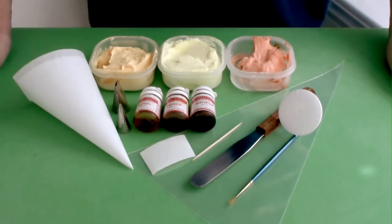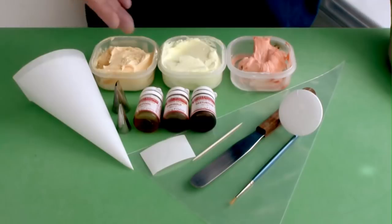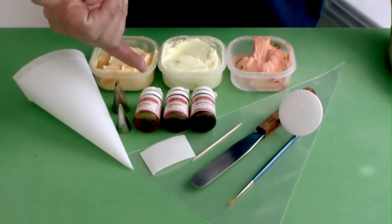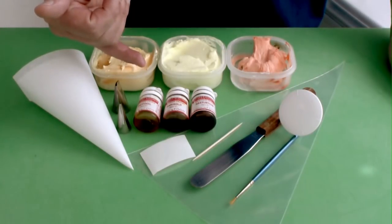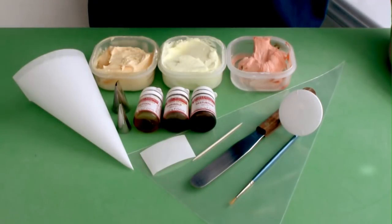Now first of all we obviously need royal icing. I've got royal icing here in three colors. I always use liquid color for my flowers, don't use paste colors. Paste colors contain glycerides and glycerine which means your flowers may not dry correctly once you finish them off.